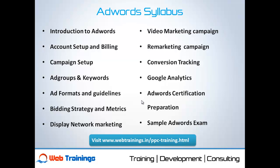Next we will study bidding strategies — Google provides various types of bidding strategies. We can focus only on clicks, only on impressions, or only on conversions; these different metrics and options will be discussed in detail. Then we will study how to advertise on external websites, that is Google Display Network marketing. After that we will study video marketing — how to target YouTube and various video channels and websites to market our videos.